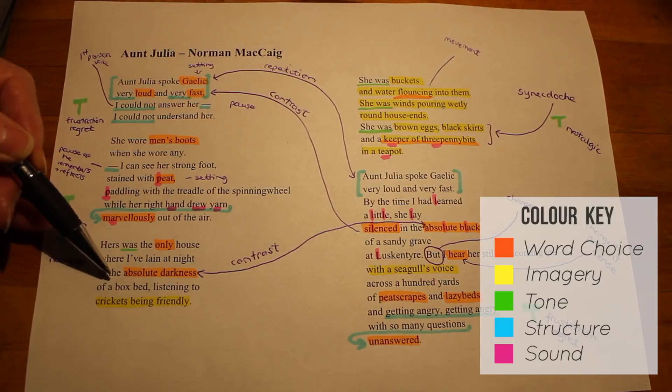Now, normally a child might be afraid of the darkness, but not here. Even though he can't understand this lady, his aunt, he feels safe with her. And that tells us something about Aunt Julia, that he didn't need language to communicate. He could tell she was a good person. There's a spiritual connection here.